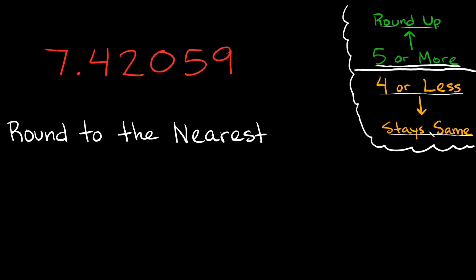What does that even mean? Let me show you. For example, let's say our problem was asking us to round to the nearest tenth. Where is the tenths spot? Well, this is the ones spot and this is the tenths spot. Since we're rounding to the tenths place, this number right here — the four — is either going to stay as a four or we're going to round it up one number to five.